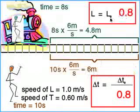And what do we get? For the contracted length, 4.8 meters. How about that? Now, let's explore this a bit further.